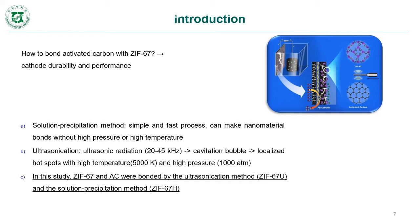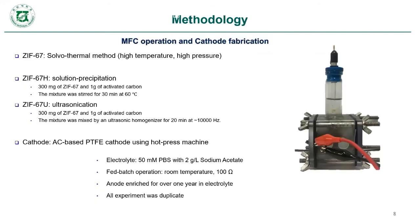One method is solution precipitation and the other is ultrasonication. The solution precipitation method is a simple and fast process that bonds the material without any high pressure or high temperature. Ultrasonication uses ultrasonic radiation from 20 to 45 kHz; during this method, cavitation bubbles explode and release energy, resulting in tight bonding of the material with activated carbon. ZIF-67 bonded with activated carbon by ultrasonication is denoted as ZIF-67U, and by solution precipitation as ZIF-67H.